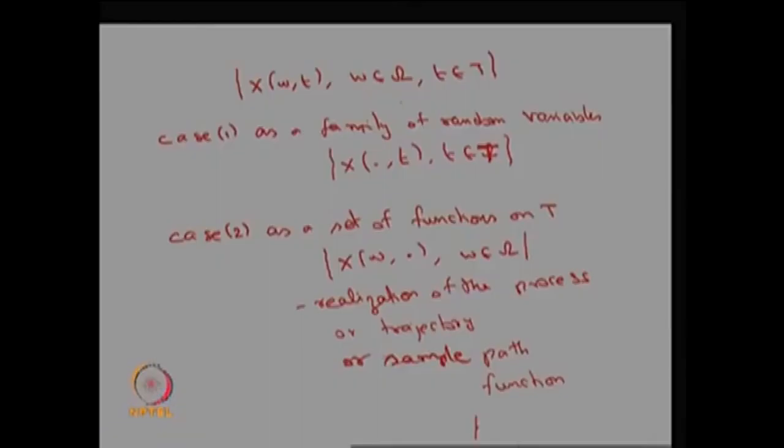The conclusion is you can always define a stochastic process as a collection of random variables for different values of t, or you can go for a collection of functions on T for different values of possible outcomes w belonging to omega. These are the two approaches to create the stochastic process.